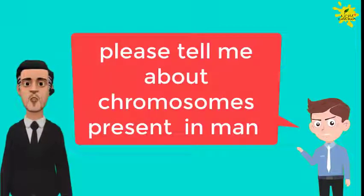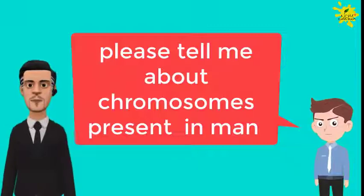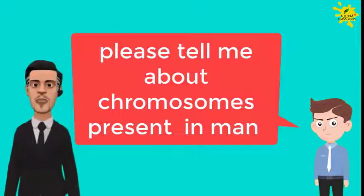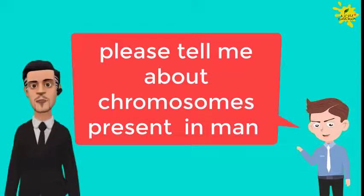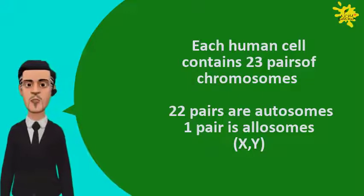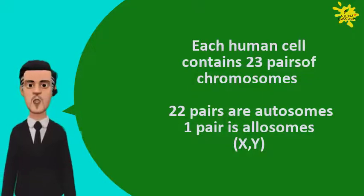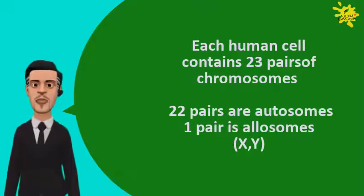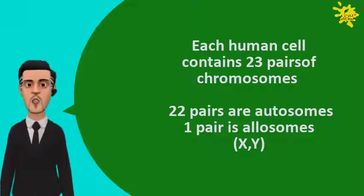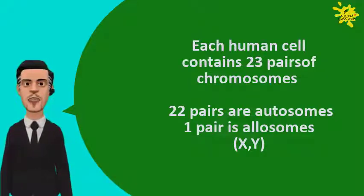Please tell me about chromosomes present in man. Each human cell contains 23 pairs of chromosomes. 23 pairs are autosomes. One pair is called allosomes. They are X and Y.